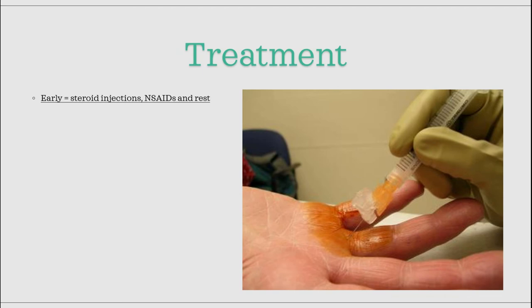An early treatment that can be done when the inflammation still occurs is to inject glucocorticoids like cortisone directly into the affected area. This can reduce the inflammation so that full-blown trigger finger does not occur. You can also give NSAIDs like ibuprofen in order to slow down the inflammation further.